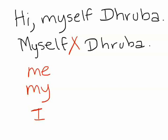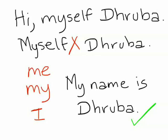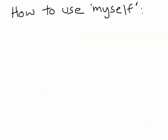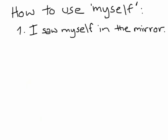The correct way to say this would be: 'My name is Dhruba.' We know now how 'myself' can't be used — but how can it be used? Mainly two ways. Firstly, like other reflexive pronouns, 'myself' is used when the subject and object of a sentence happen to be one and the same person — in this case, you, the speaker. In other words, when you are both performing and receiving an action, you use 'myself' as the object. Hence, we say: 'I looked at myself in the mirror.'